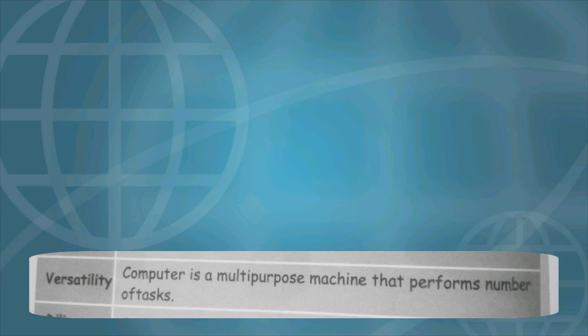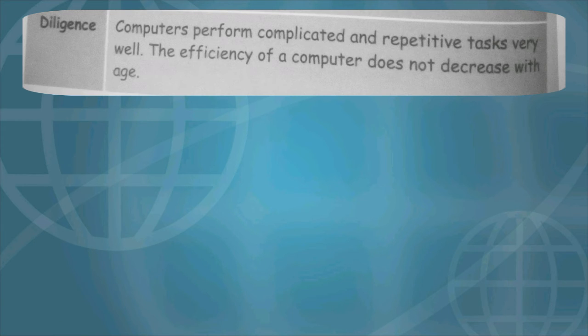Versatility. Computer is a multipurpose machine that performs a number of tasks. Diligence. Computers perform complicated and repetitive tasks very well. The efficiency of a computer does not decrease with age.